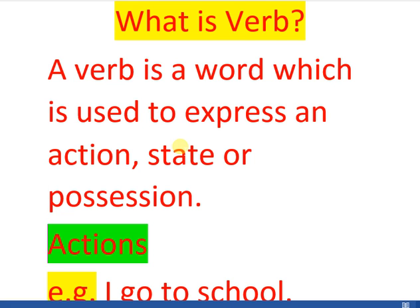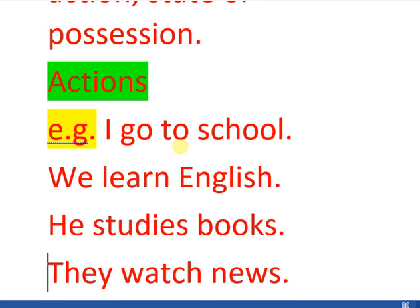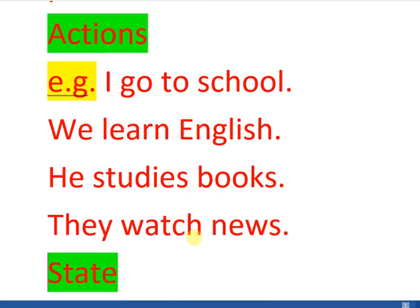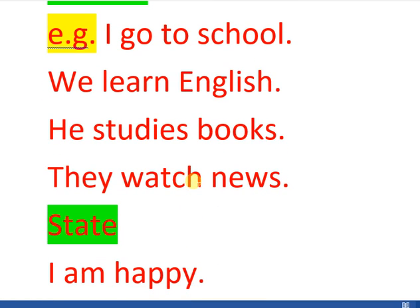The first function is that a verb is a word which shows an action. For example: 'I go to school' — here 'go' is a verb showing action. 'We learn English' — 'learn' is a verb. 'He studies books' — 'studies' is a verb. 'They watch news' — 'watch' is a verb because it shows an action.